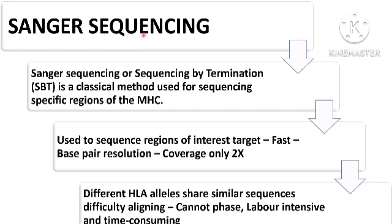Sanger sequencing is a traditional DNA sequencing method that can be used for HLA typing at high resolution. It is also called sequencing by termination, or SBT, and involves sequencing of the PCR-amplified HLA regions to identify the specific alleles present. Sanger sequencing can provide detailed HLA typing but it is more time consuming, expensive, and labor intensive compared to NGS. Different HLA alleles sharing similar sequences cannot be aligned properly using Sanger sequencing. The advantages are that it can be used to sequence regions of interest with good resolution, though coverage is only 2x.